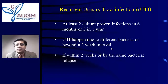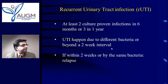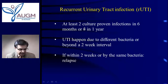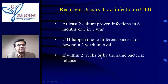Now let's look at what defines recurrent urinary tract infection. Any woman who has two culture-proven infections in a six-month period or three in a year is considered to have recurrent UTI. A reinfection typically involves a different bacteria or occurs beyond a two-week interval. If it is within two weeks or involves the same bacteria, it is usually a relapse.